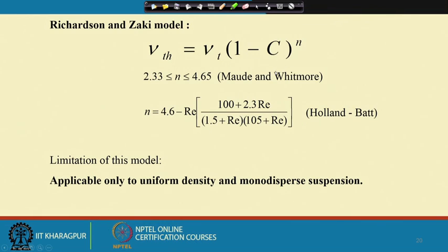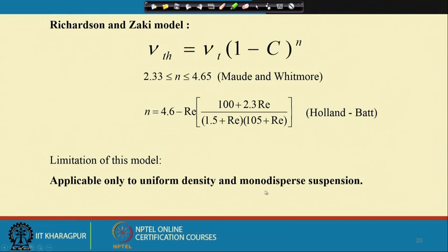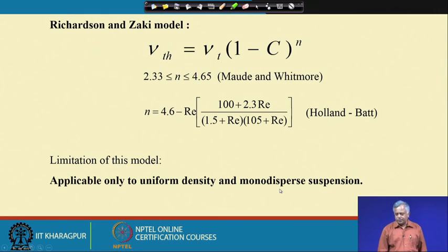If you increase the volumetric concentration of a mono-dispersed suspension beyond a certain point, the hindered settling velocity will approach zero — meaning the fluid has become so viscous that particles can no longer move. This equation should be used with caution and is applicable only for uniform density and mono-dispersed suspensions.